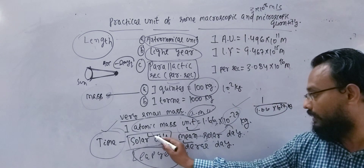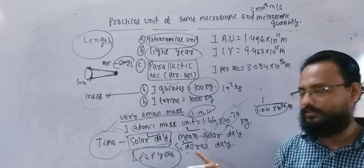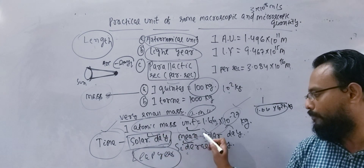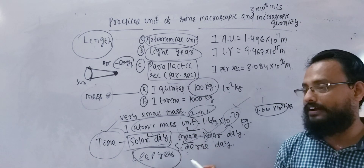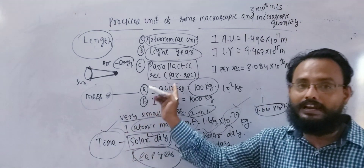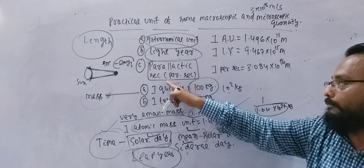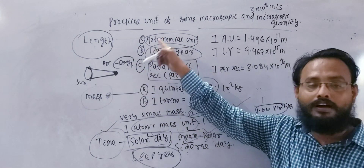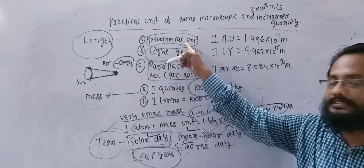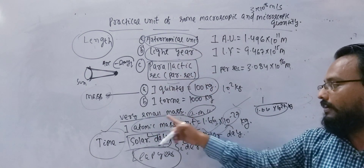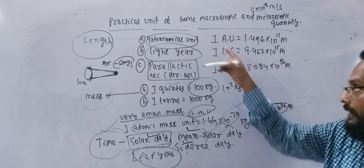Solar day, mean solar day, sidereal day, mean solar day, linear, sidereal day, mean solar day, leap year — this is the unit which is time. But light year — what is that unit? It is length. If you see that unit which is length — but a unit — not mass. So these are all about the practical unit.